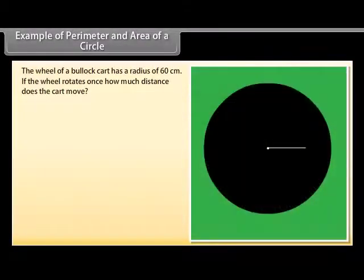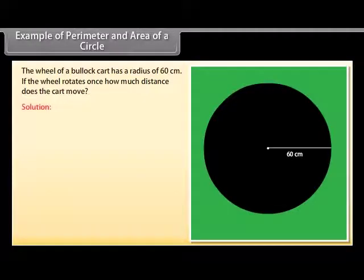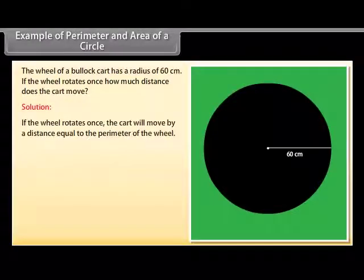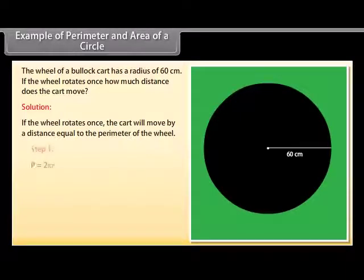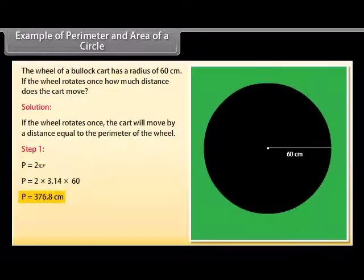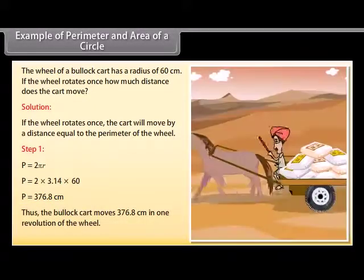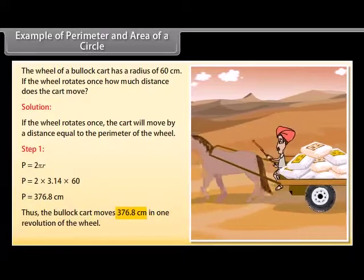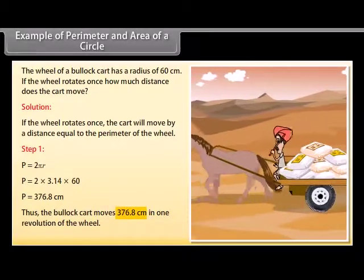Example 3: The wheel of a bullock cart has a radius of 60 cm. If the wheel rotates once, how much distance does the cart move? If the wheel rotates once, the cart moves a distance equal to the perimeter of the wheel. P = 2πR = 376.8 cm. Thus, the bullock cart moves 376.8 cm in one revolution.